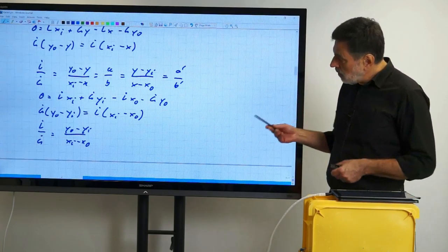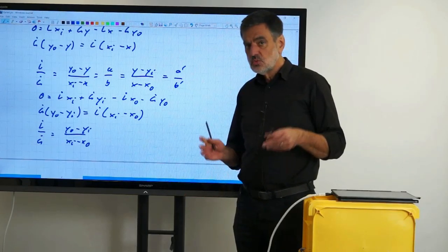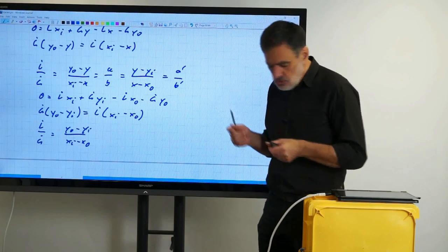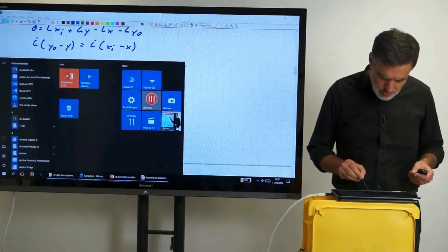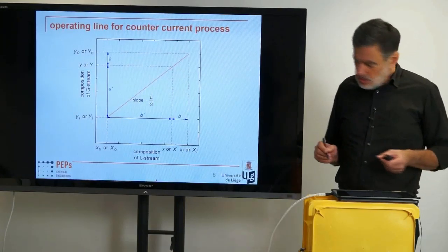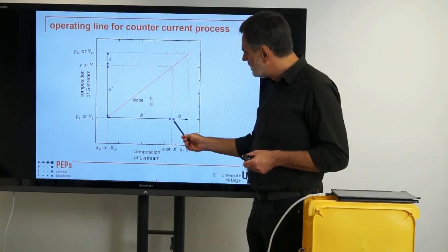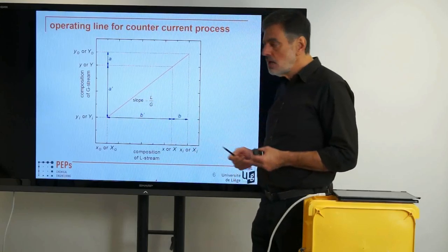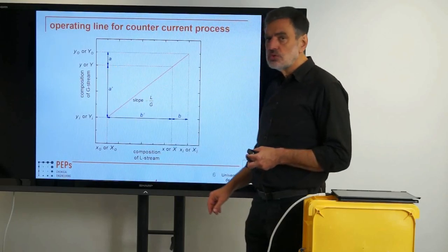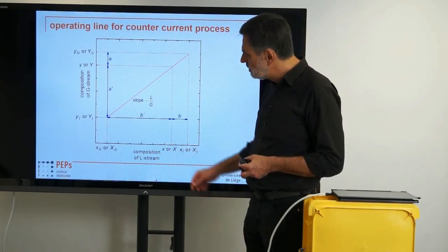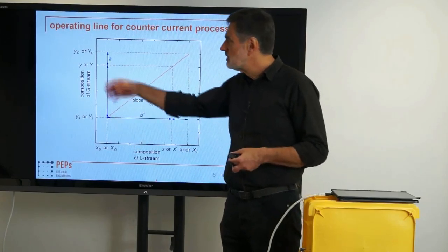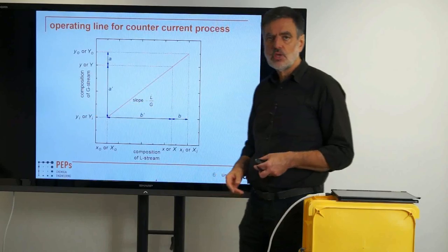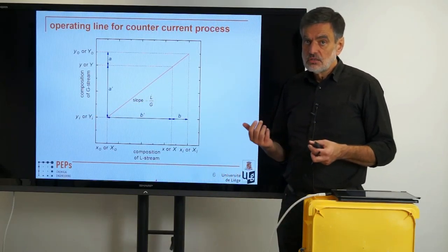The slope corresponds to the Y-difference divided by the X-difference, which is obvious — but it also has a graphical meaning regarding the flow rate ratio. We have A over B and A′ over B′, which both equal the slope L-dot/G-dot. This means the length A is proportional to the L-dot stream and B corresponds to the G-dot flow rate. You can regard this as a sort of rectangular lever rule.